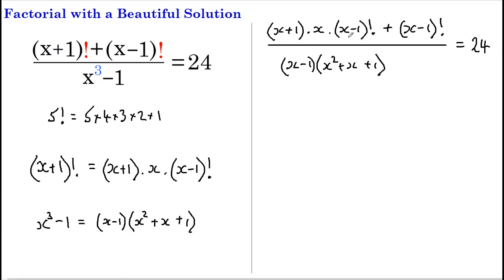Now let's factorize the top, pulling out that (x-1) factorial. So we've got (x-1) factorial multiplied by (x+1) times x plus 1, and the bottom remains the same: (x-1) multiplied by (x squared plus x plus 1).